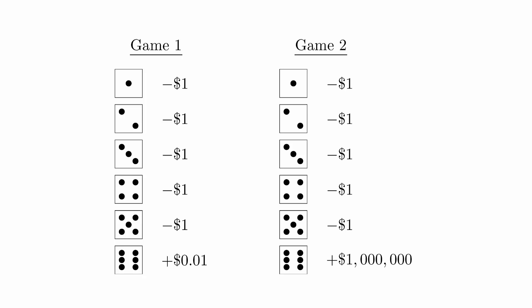Game 2. You roll a standard six-sided die. You lose one dollar if you roll one through five and win one million dollars if you roll a six.